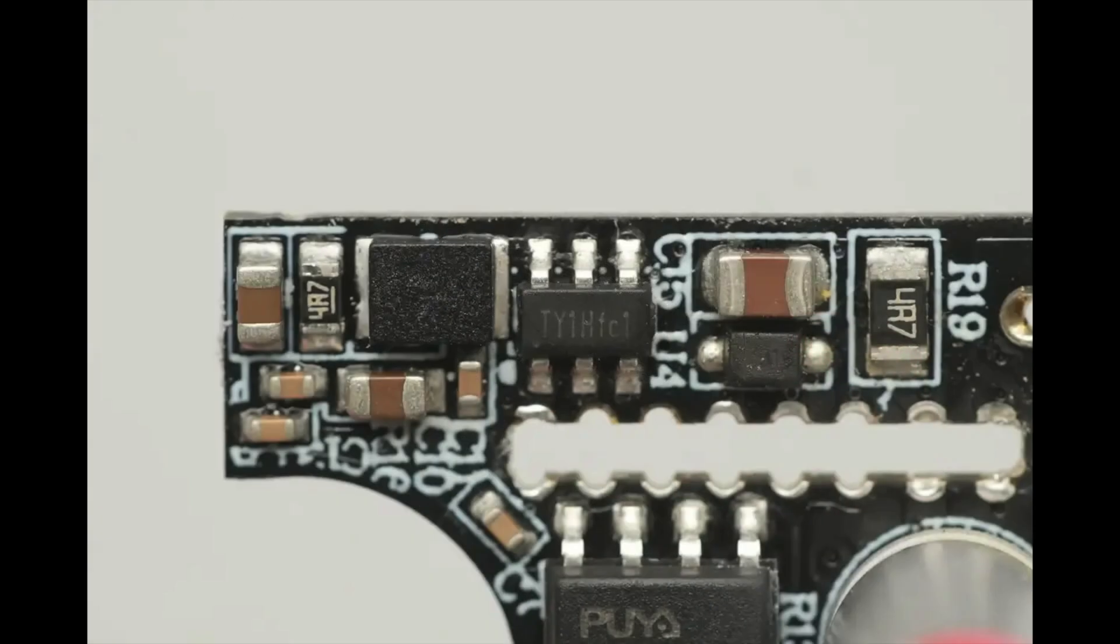The synchronous buck converter used to step down the voltage for the MCU and display is from TOL, marked TY1H, model TMI3341. It is a high-efficiency 1.5 MHz synchronous buck converter capable of delivering up to 1.2 Amps output current. The TMI3341 integrates high and low-side MOSFETs with low on-resistance to effectively reduce conduction losses. Under light load conditions, the chip operates in pulse frequency modulation mode, significantly improving light load efficiency.